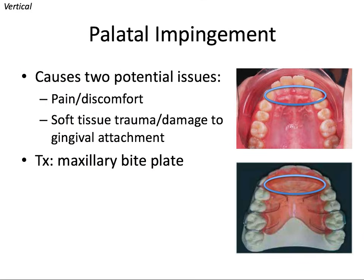We can also get palatal impingement, which is the result of the opposite problem — a deep bite. Palatal impingement refers to lower incisors biting into the soft tissue of the palate, and it can cause two potential issues: pain and discomfort, and soft tissue trauma or damage to the gingival attachments of the upper teeth. This can be treated with a maxillary bite plate, which has thick anterior acrylic that protects the palate and helps to intrude the lower anterior teeth and correct the deep impinging bite.